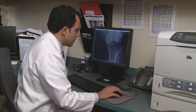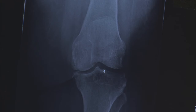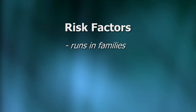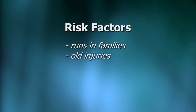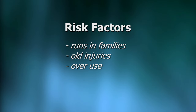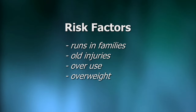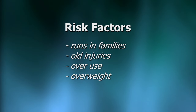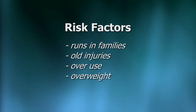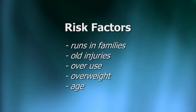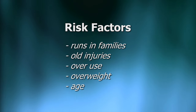Your doctor can tell if you have osteoarthritis by discussing your symptoms with you, examining your joints, and looking at an x-ray of your knee. Osteoarthritis tends to run in families. Other people at risk are those who have old knee injuries, or who have done sports or work that overuses their knees, and people who are overweight. Carrying around extra pounds causes greater wear and tear, which damages the joints, particularly the knees. Your risk of developing osteoarthritis increases as you age.